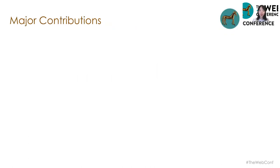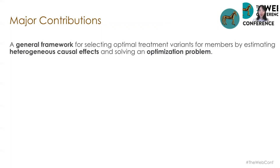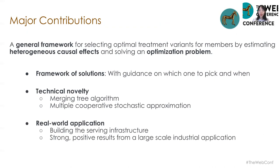Here is a brief summary of the main contributions of our paper. We developed a general framework for selecting optimal treatment variants for members by estimating heterogeneous causal effects and solving an optimization problem. We discussed ways to identify which among the proposed techniques should be chosen for a given application. For technical novelty, we introduced a new margin tree algorithm to handle multiple treatments and metrics. We adopt multiple cooperative stochastic approximation to solve multi-objective optimization while considering the variance in estimations. We do extensive simulations to show the benefit of our framework, describe the infrastructure required to put such a system in production, and show strong positive results from a large-scale industrial application.